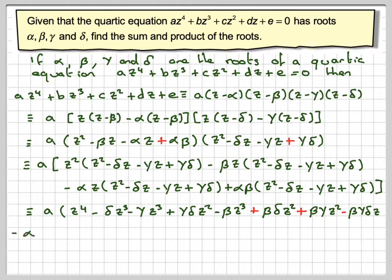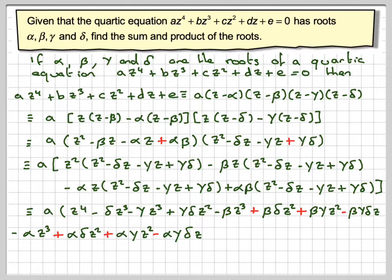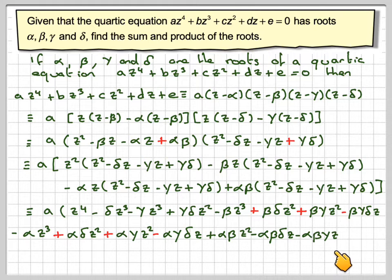Then doing the other brackets, again going through with a minus sign: minus alpha·z³ plus alpha·delta·z² plus alpha·gamma·z² minus alpha·gamma·delta·z. The next one is positive: plus alpha·beta·z² minus alpha·beta·delta·z minus alpha·beta·gamma·z. And then plus alpha·beta·gamma·delta.